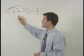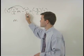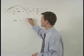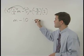2 times 1 half m is just m. And 2 times negative 5 is negative 10. So we have m minus 10 on the left side of the equation.